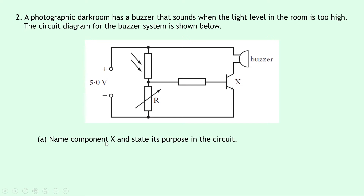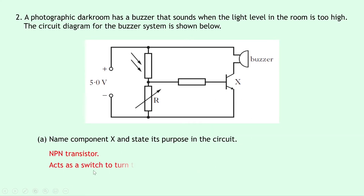Part A says to name component X and state its purpose in the circuit. Notice how this one, just like in question 1, has an arrow that is not pointing in. So this is an NPN transistor and its purpose in the circuit is to act as a switch to turn the buzzer on and off — so instead of an LED this time, we've got a buzzer.